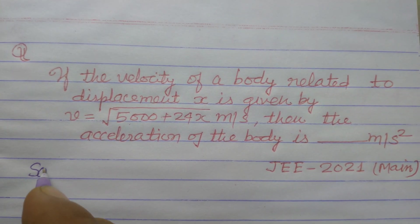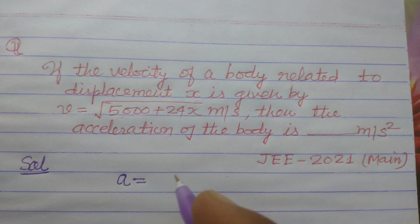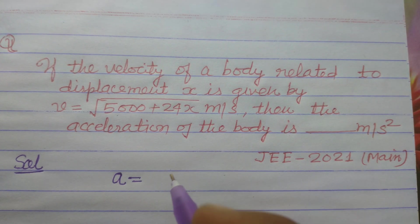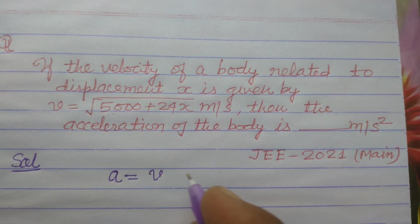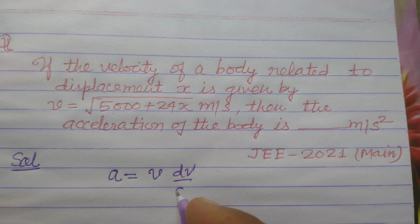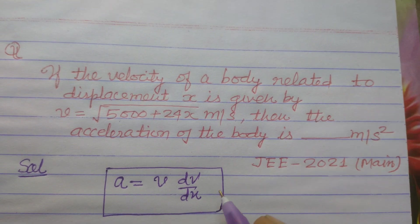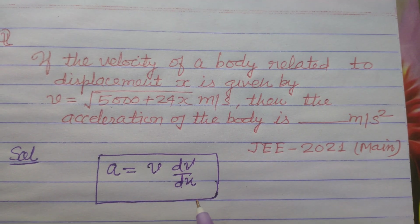So students, you know this formula: when velocity is a function of displacement, the acceleration of the body is a = v(dV/dx). Always learn this formula. Here, x is displacement.